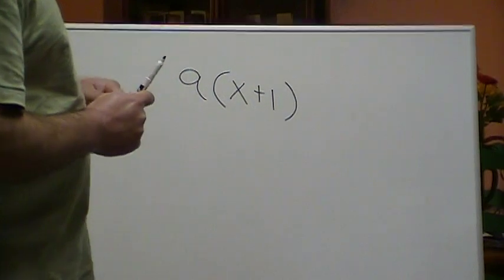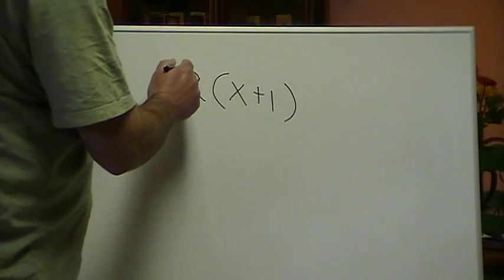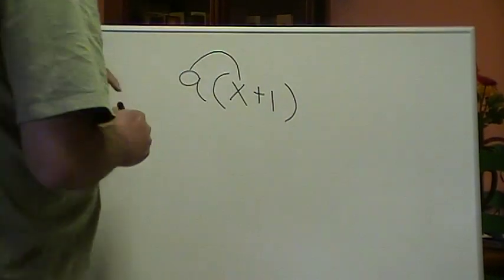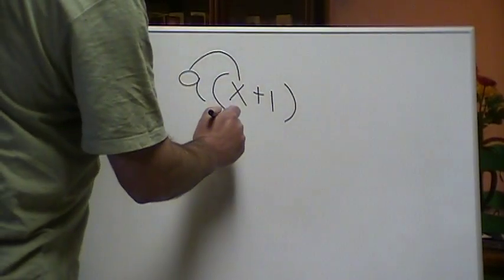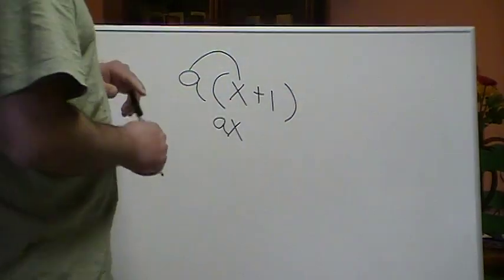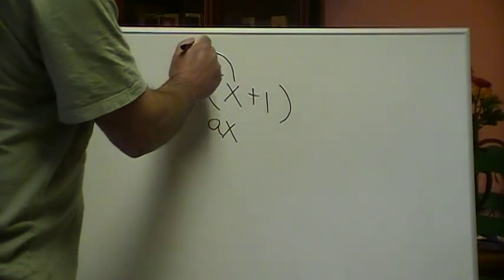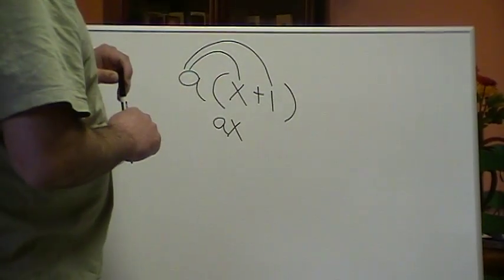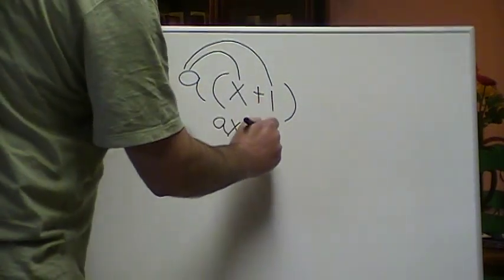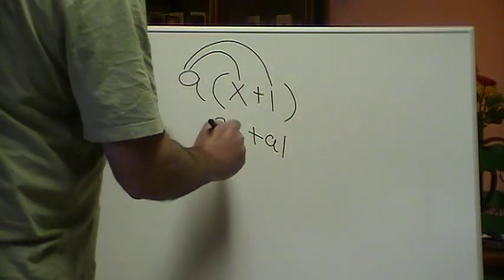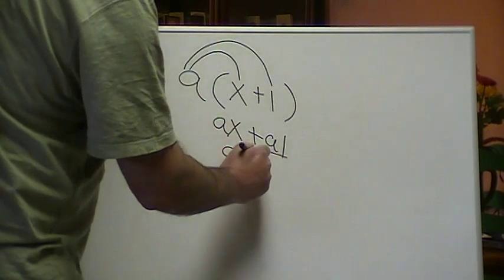What you do with the distributive property is very simple. All you do is take the term that's outside of the parentheses and multiply it by the first term in the parentheses. So, a times x is ax. Then you take the term outside of the parentheses and multiply it by the second term in the parentheses. So, this is plus a times 1, which is just a. So the answer is going to be ax plus a.